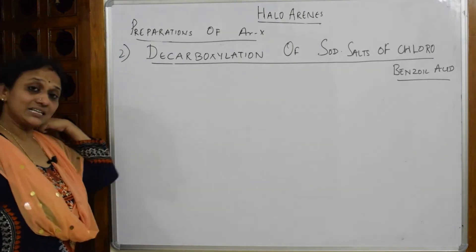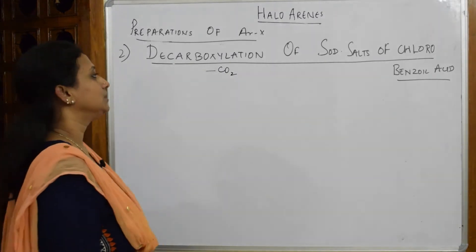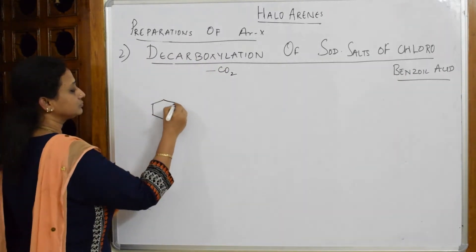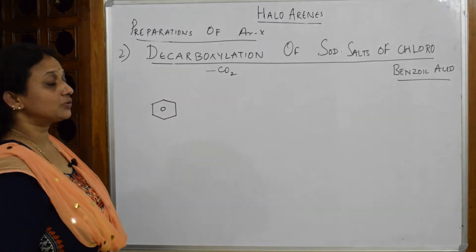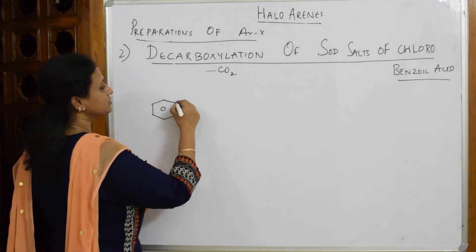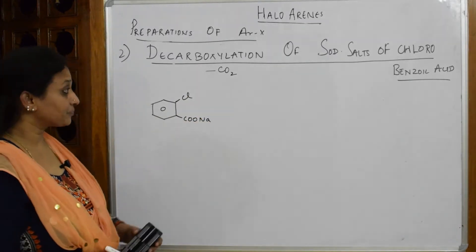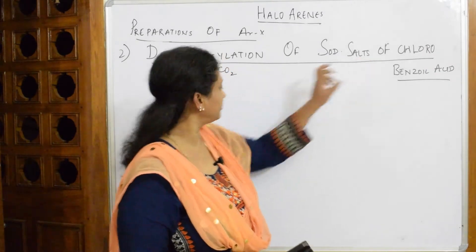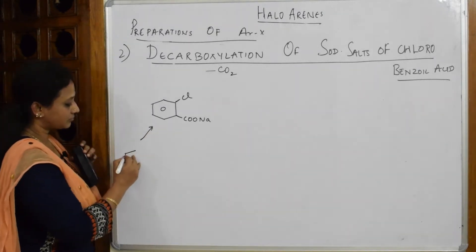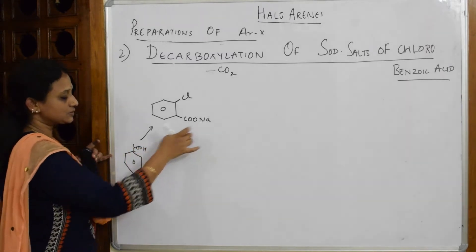What is decarboxylation? Decarboxylation is removal of carbon dioxide. Now, the sodium salt of chlorobenzoic acid — the parent atom is benzene. Benzoic acid is C₆H₅COOH; if I take out this H and replace it with sodium, I get sodium salt of benzoic acid. They've also given one chlorine.